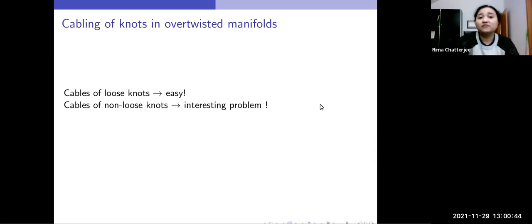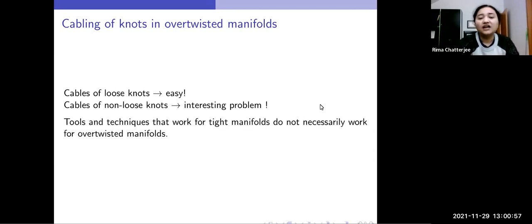Now, what about cables of non-loose knots? This is an interesting problem because we have examples where if you take a non-loose knot and if you do the cabling, it becomes loose. And also the tools and techniques that work for tight manifolds do not necessarily work for overtwisted manifolds. And this should not be very surprising because the geometry is so different.